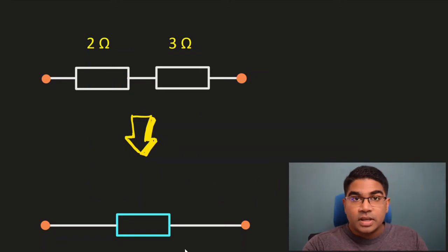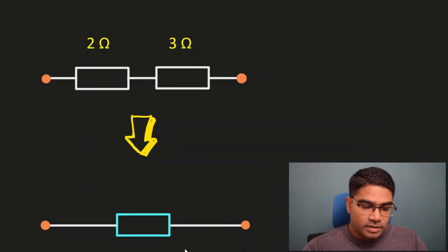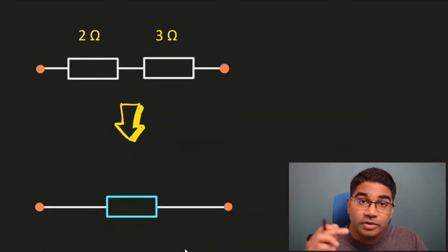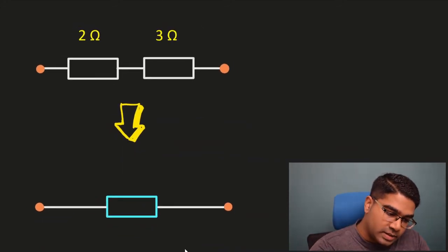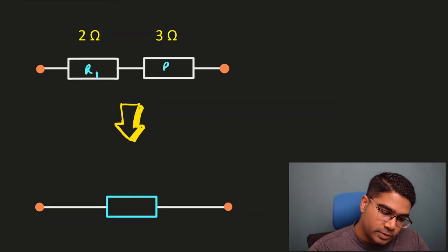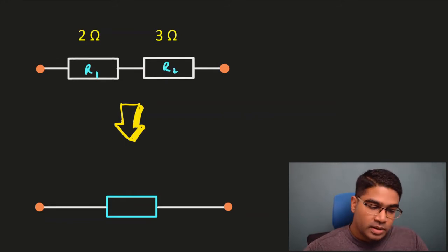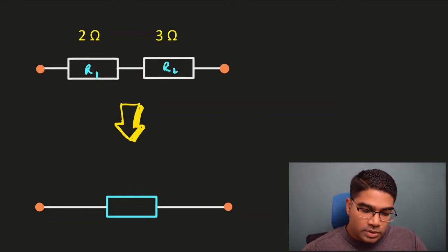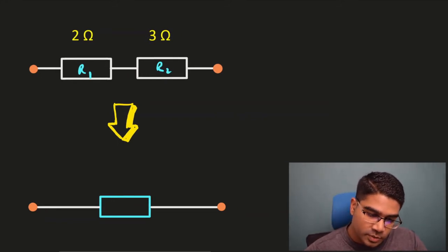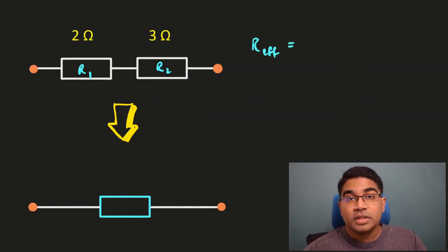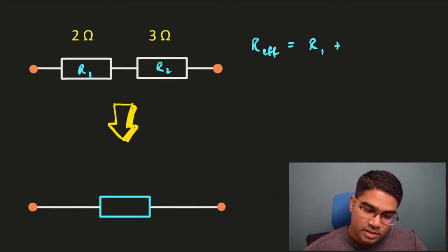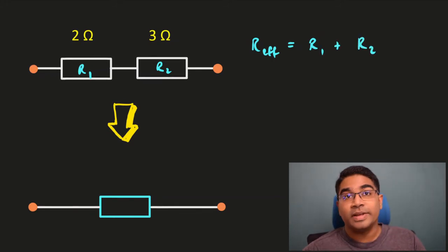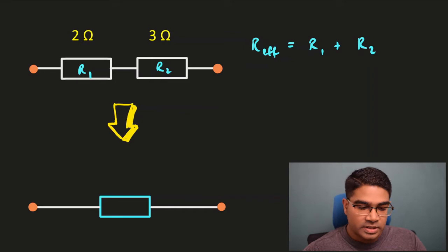So how do we combine this? When we combine resistance in a series circuit, it's very simple. Let's say this is R1 and R2. The effective resistance — I'm going to use R_eff for effective resistance — will equal R1 plus R2. That is all we have to do for a series circuit.